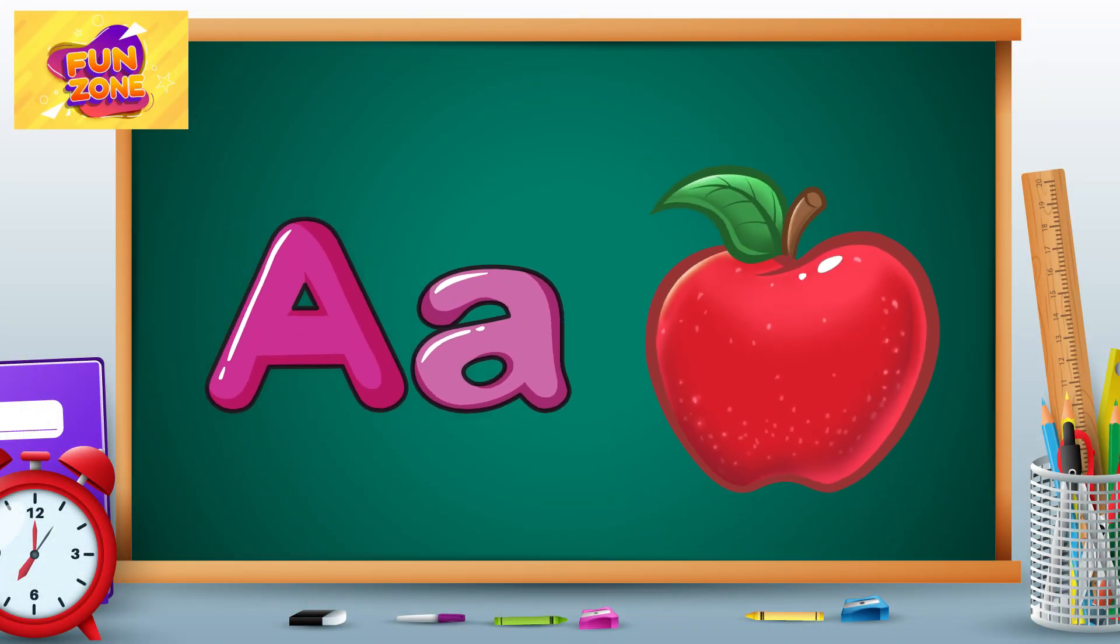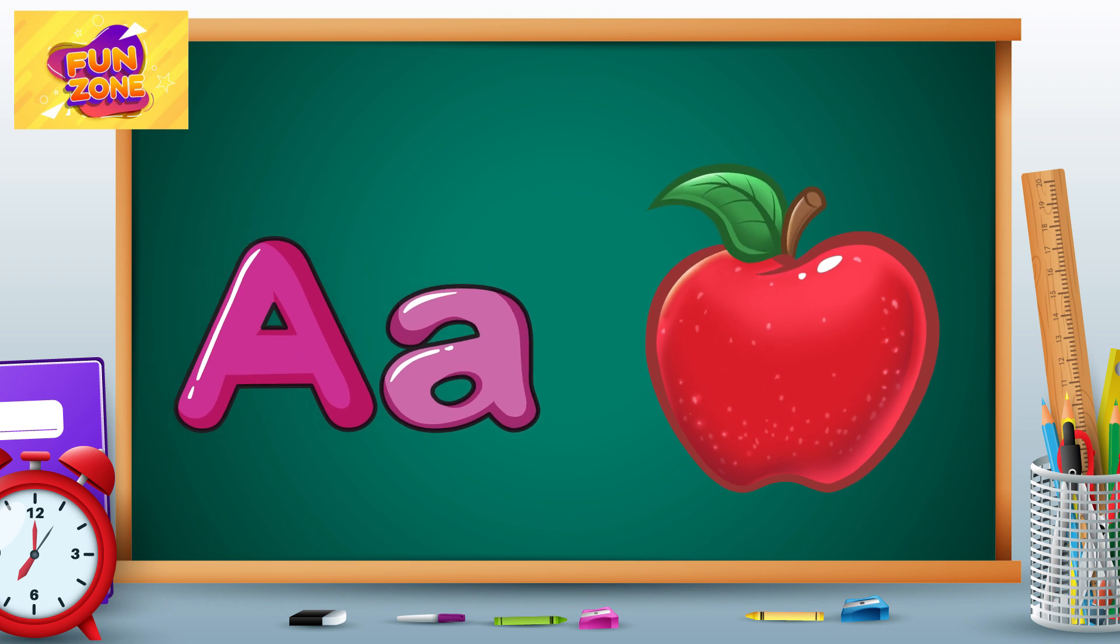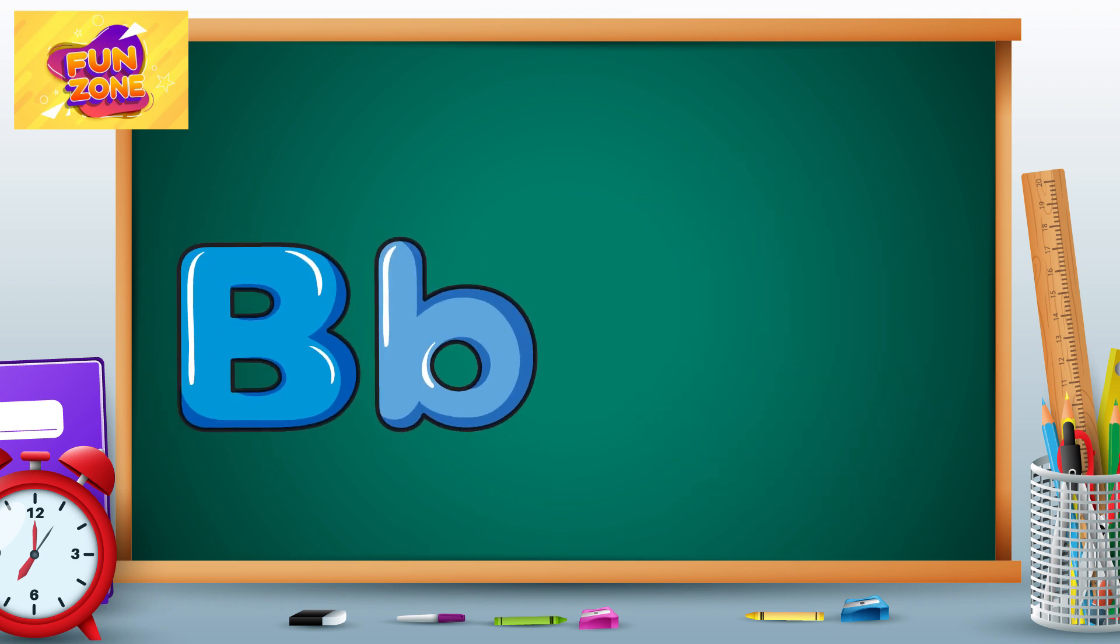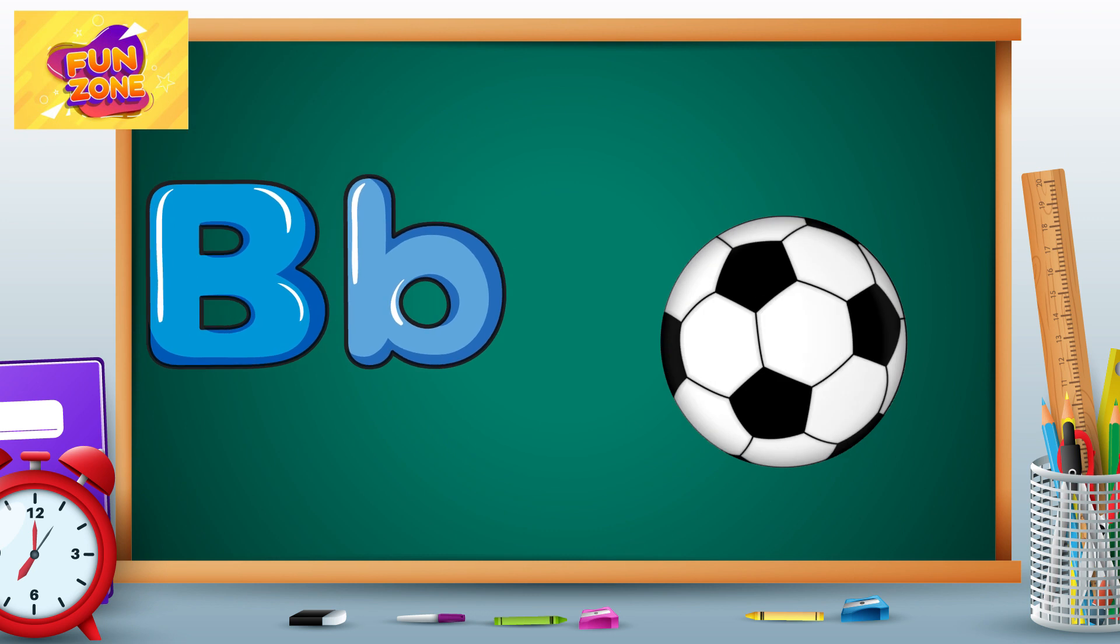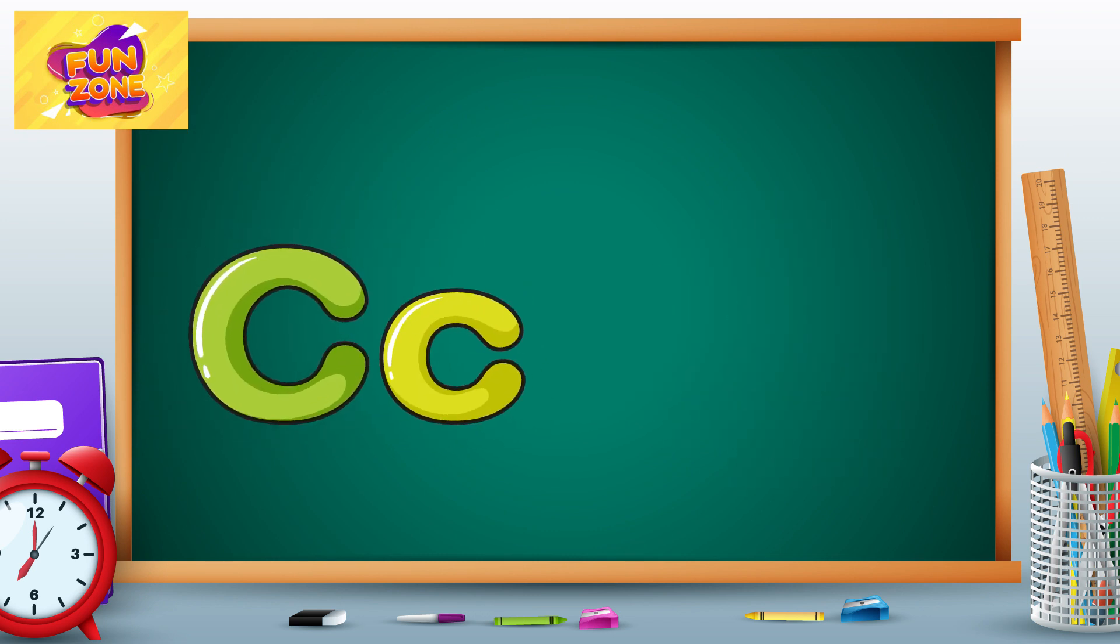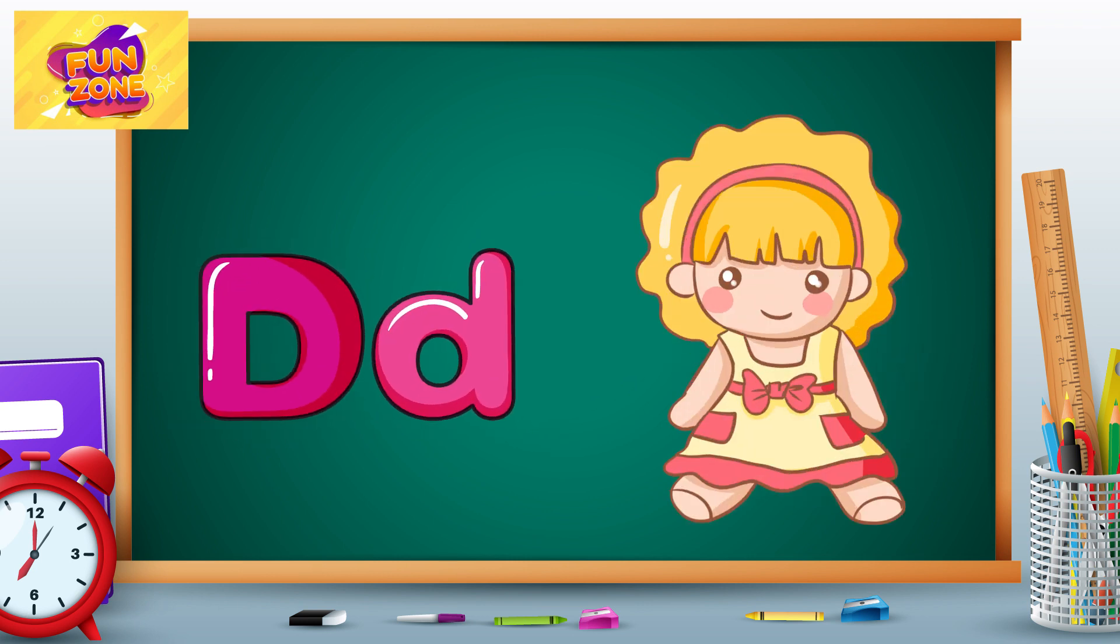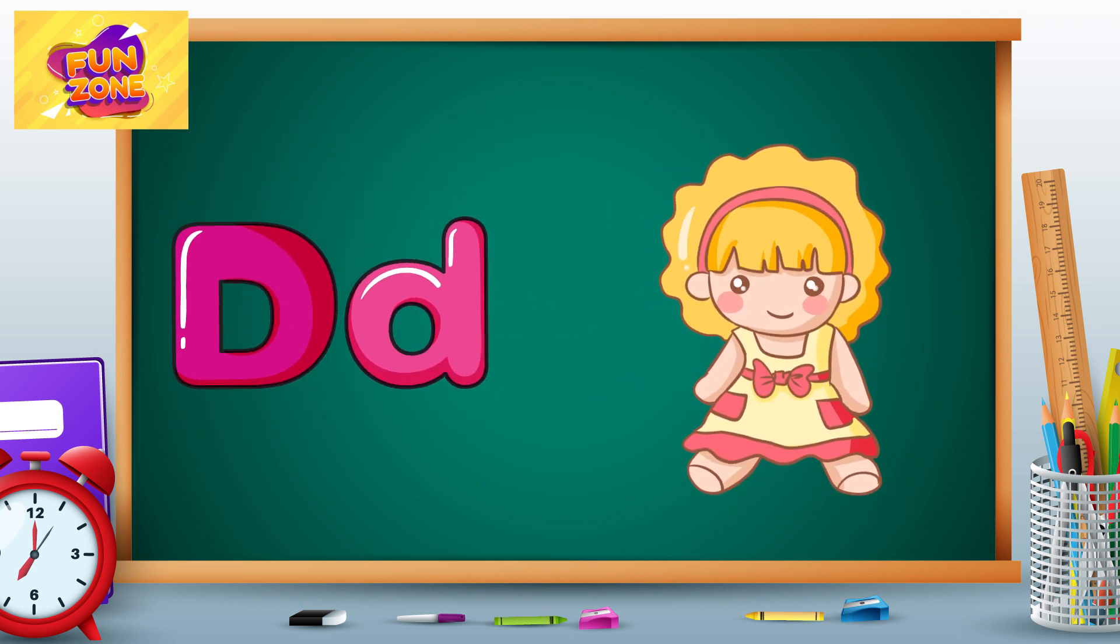A is for apple, a-a-apple. B is for ball, b-b-ball. C is for cat, c-c-cat. D is for doll, d-d-doll.